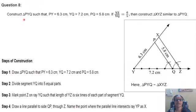Question number 8. Construct triangle PyQ such that PY length is 6.3 cm, YQ is 7.2 cm, and PQ is 5.8 cm.